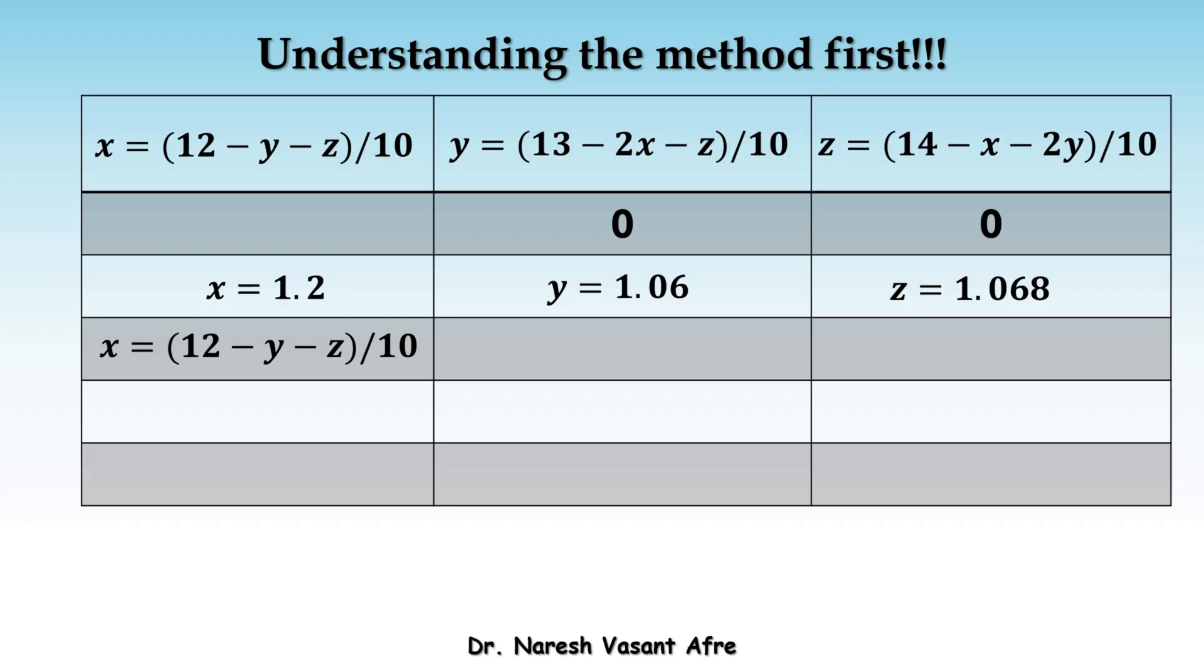Now, for the second iteration, to compute X, we use the latest value of Y and Z which is available. That is Y is equal to 1.06 and Z is equal to 1.068 and that gives us X is equal to 0.9872.